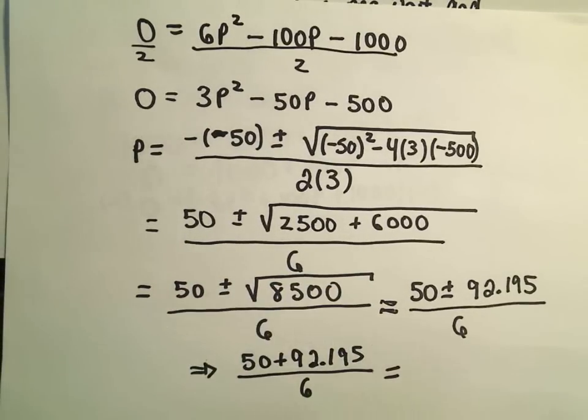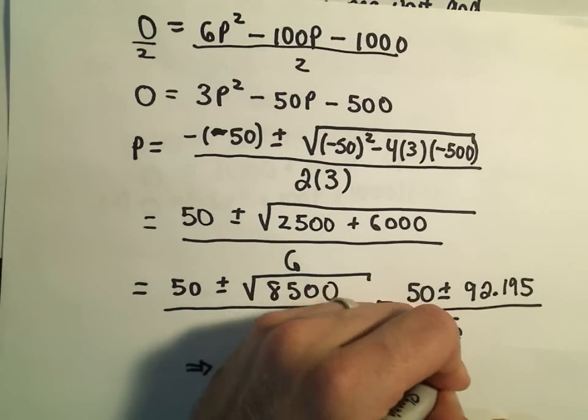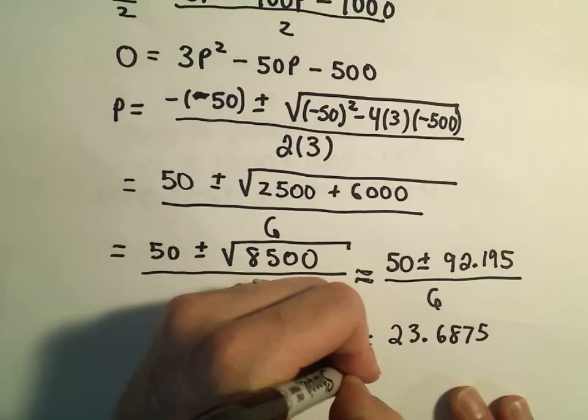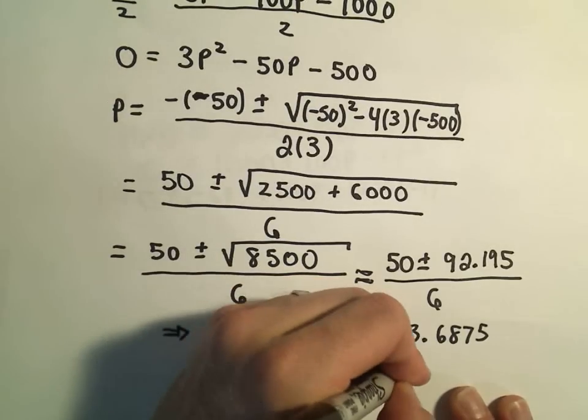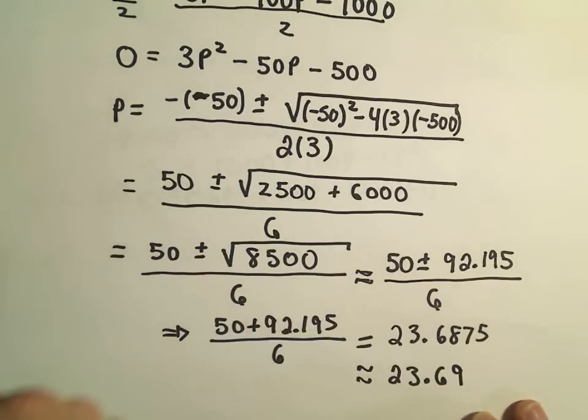And when I simplify that, so 50 plus 92.125, that's not too hard. But then when we divide that by 6, I'm getting 23.6875. And since we're talking about money, I would round that up to probably .69.